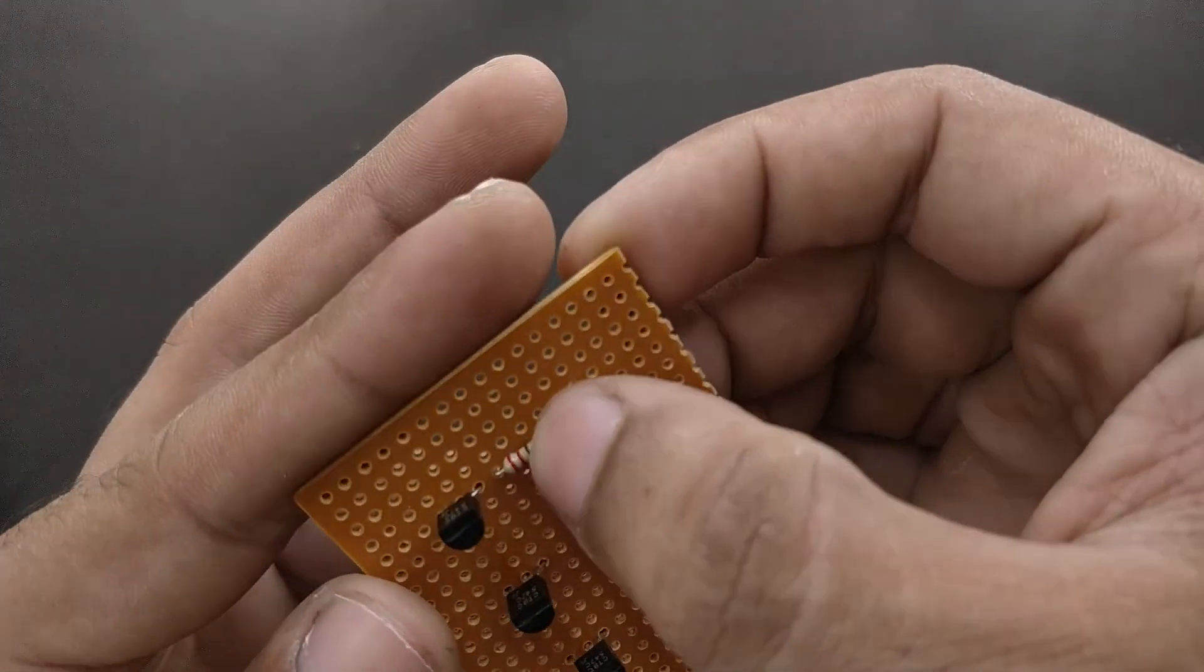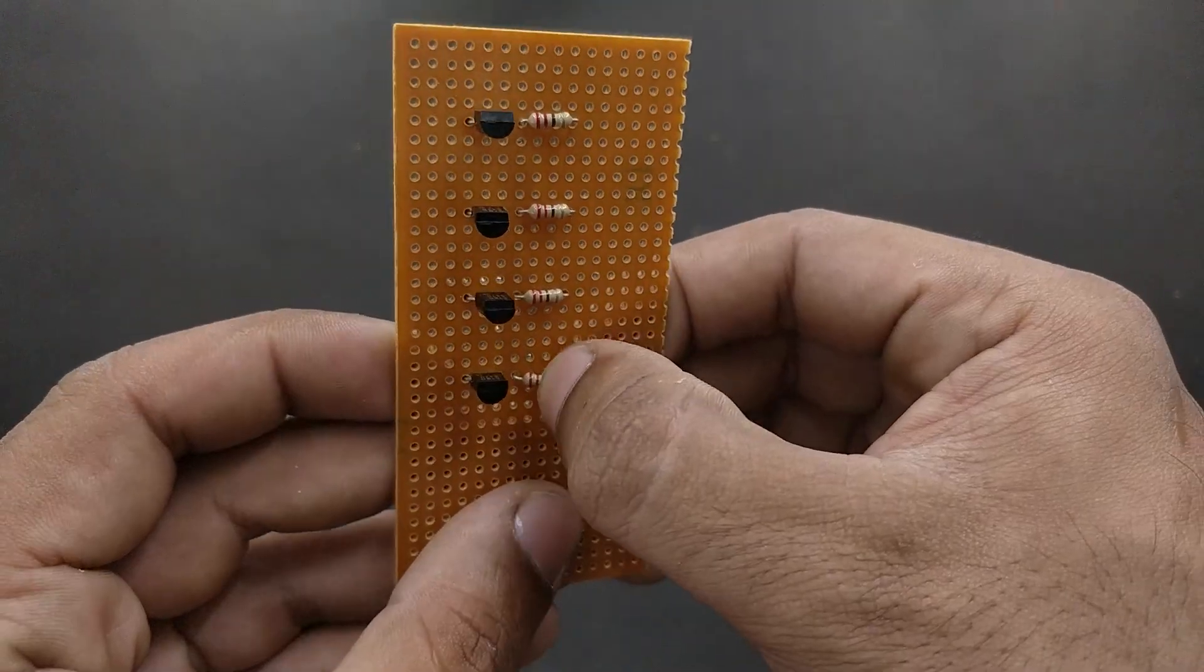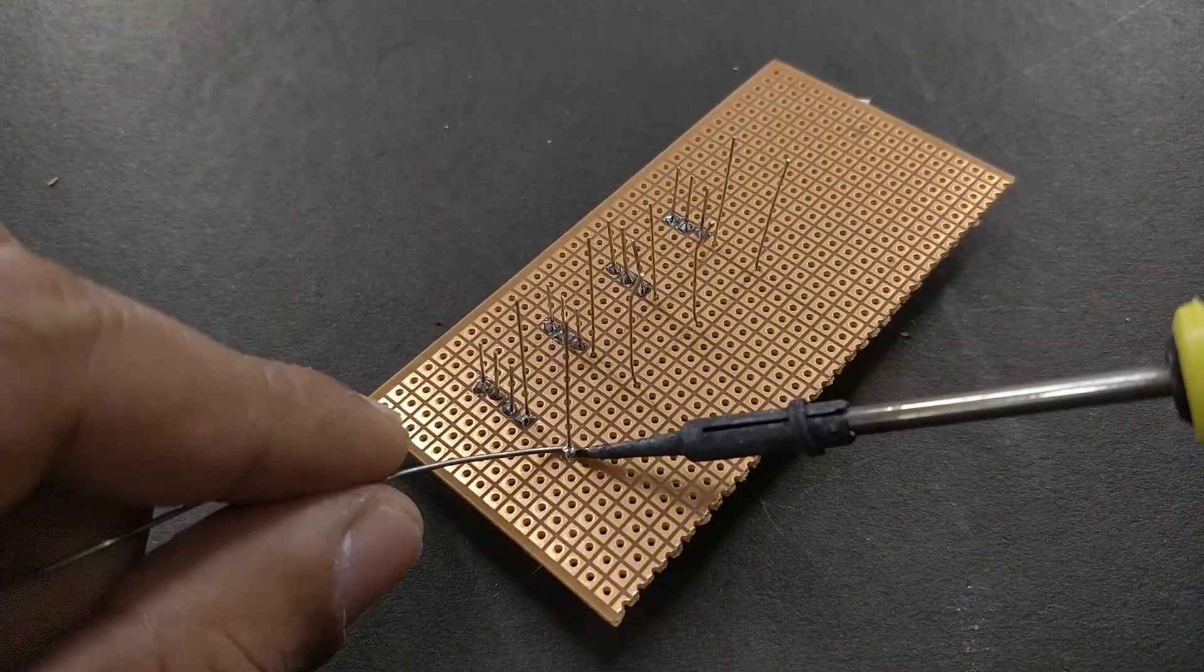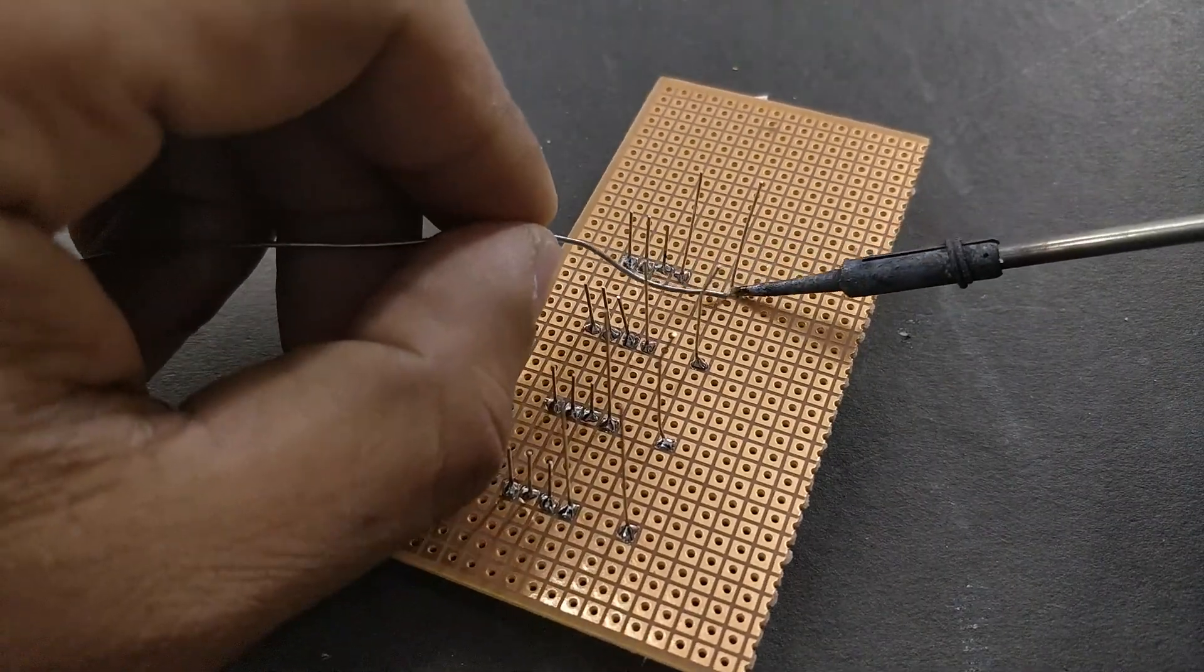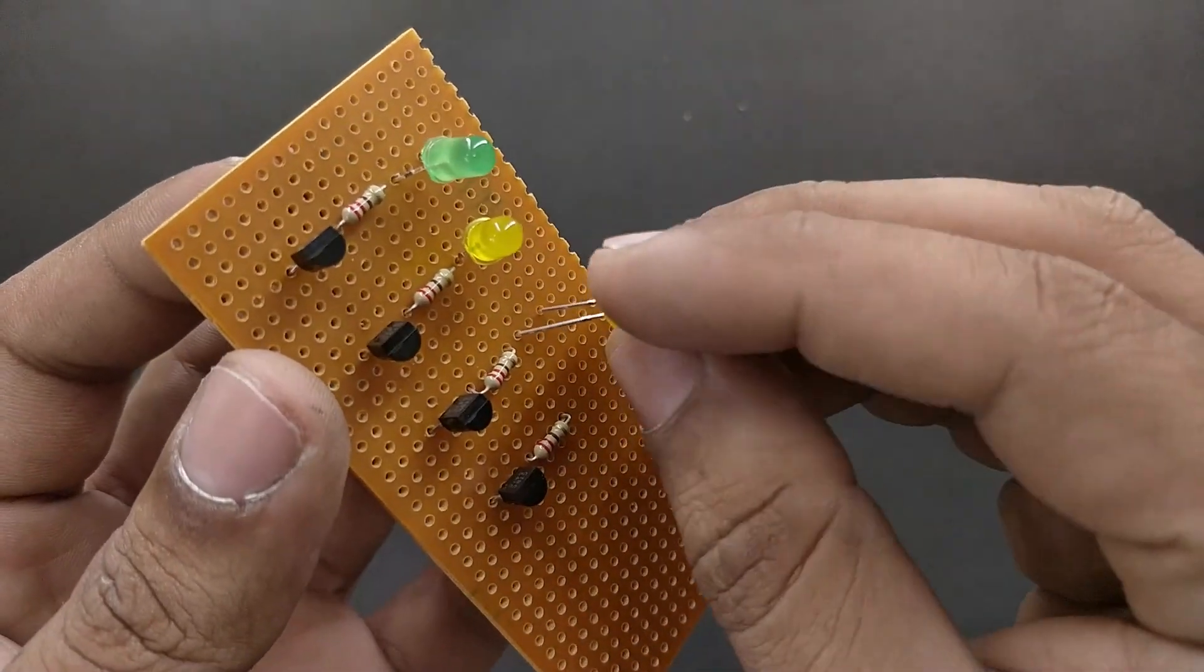After that, arrange all four resistors in series with the collector pin of the respective transistors and solder it. Now arrange all the LEDs with their negative pins in series with the resistors.